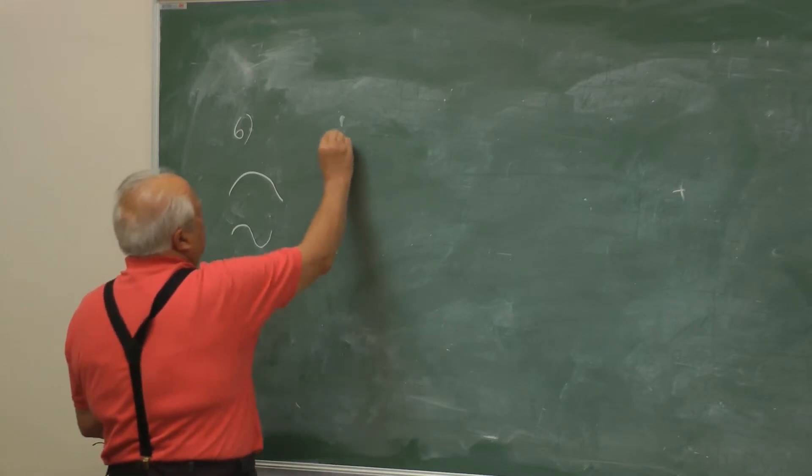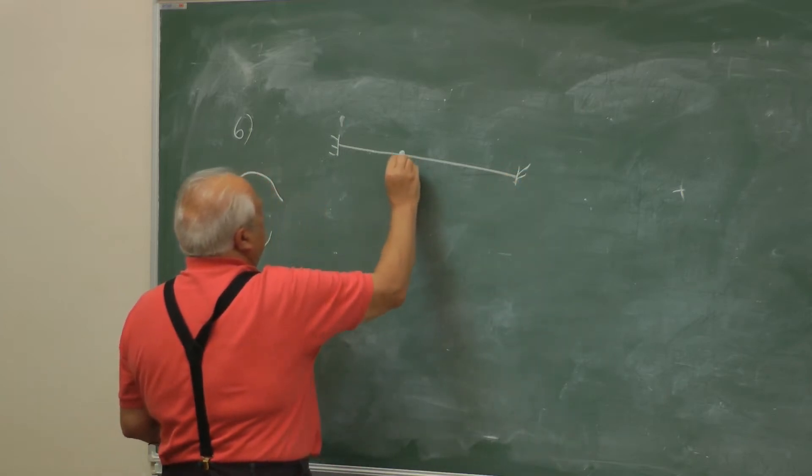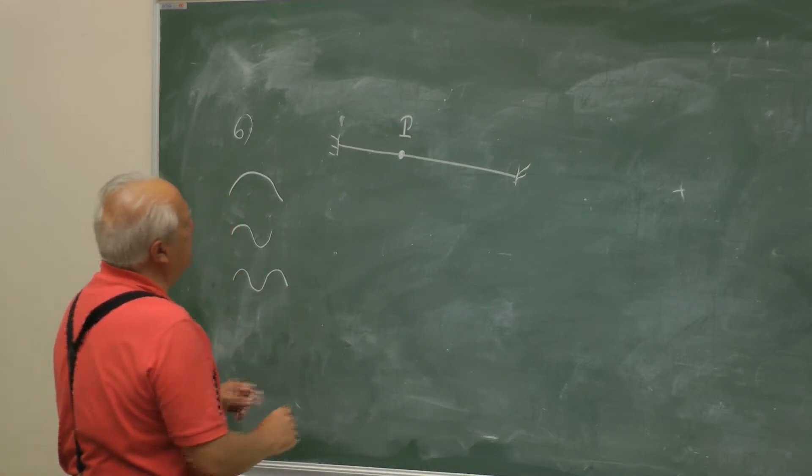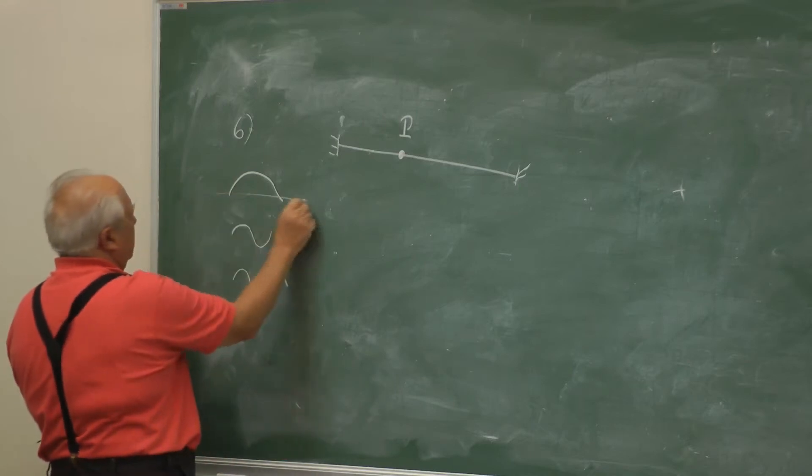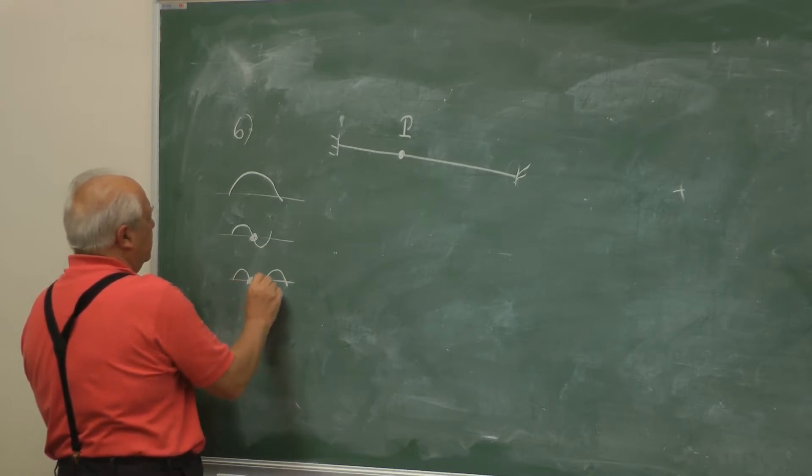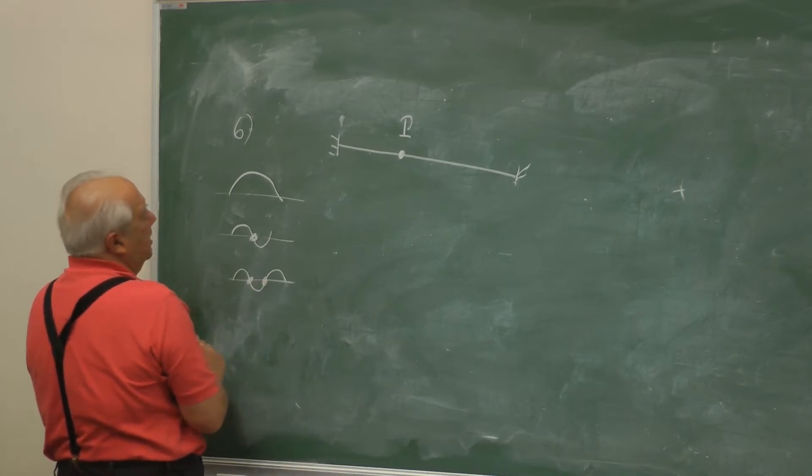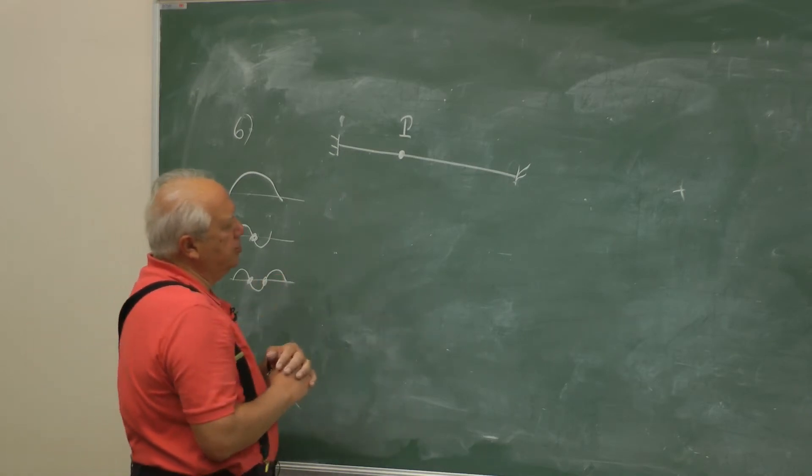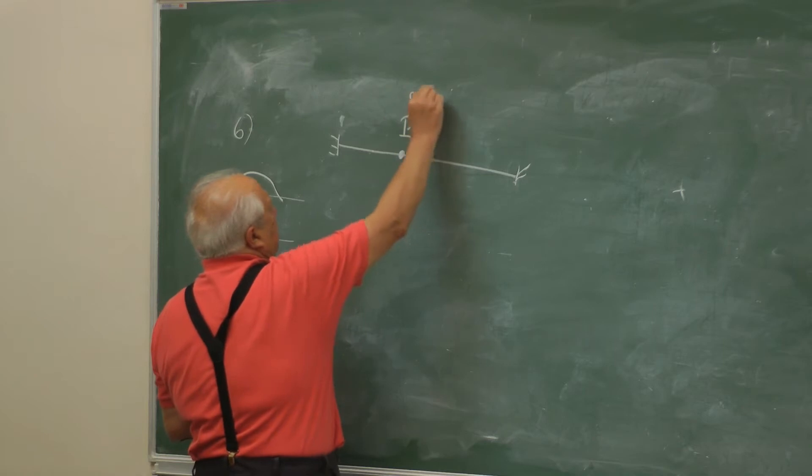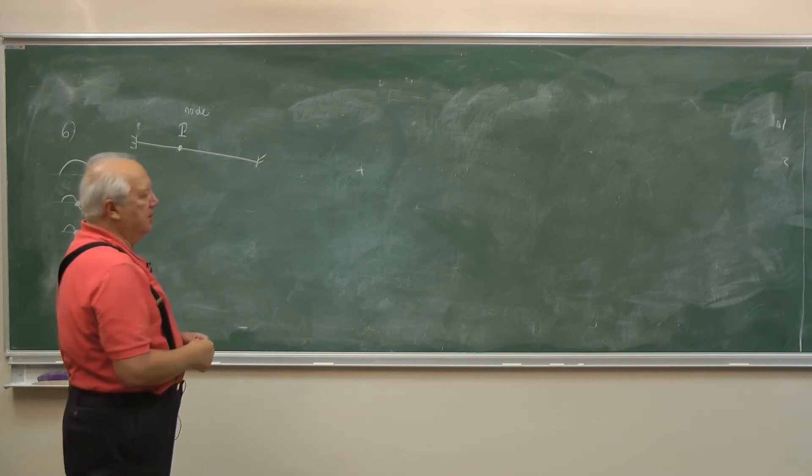Here is an interesting problem. Suppose you play the string in such a way that there is a point P such that this is a node. There are two nodes here, not counting the 0 and L in between. We play a normal mode in which P is a node.